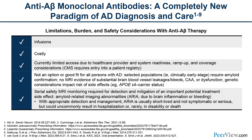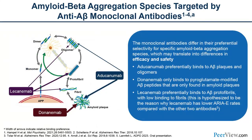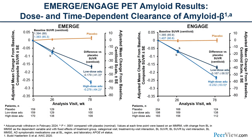Each monoclonal antibody targets a different species in the amyloid aggregation cascade — from monomer to dimer, oligomer, protofibril, fibril, and plaque. Lecanemab works primarily at the oligomer and protofibril stage, while donanemab works largely at the plaque stage. These differences may explain why ARIA rates differ between the antibodies.